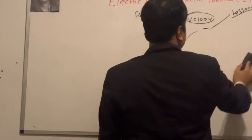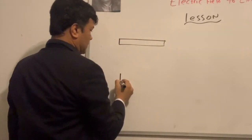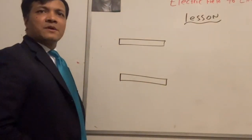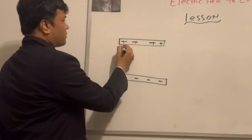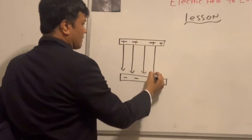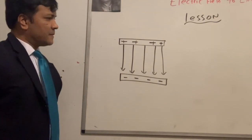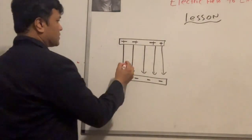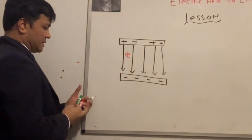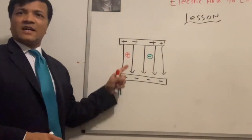Now let's start the lesson. From our setup, we have two plates with field lines going from positive to negative. We can place a positive charge and a negative charge in the field. We want to draw force vectors: what is the direction of the force on the positive charge?